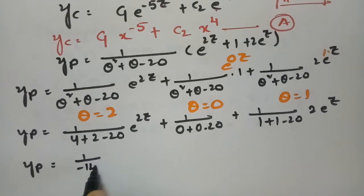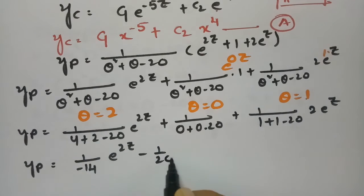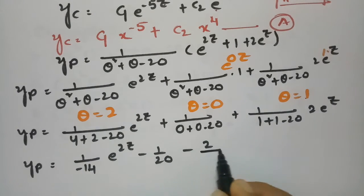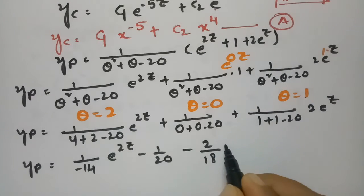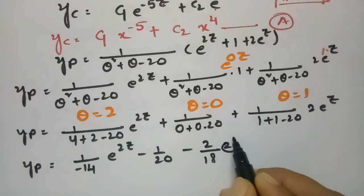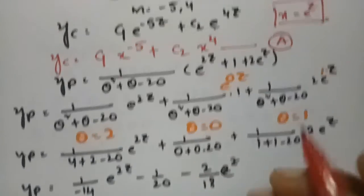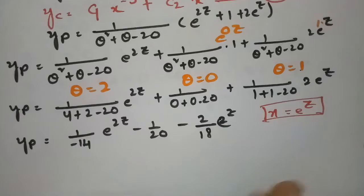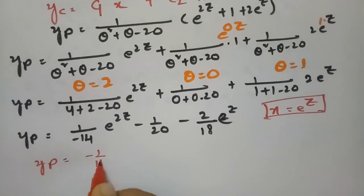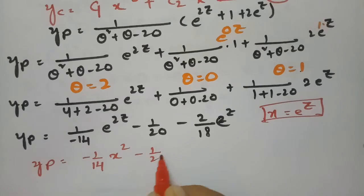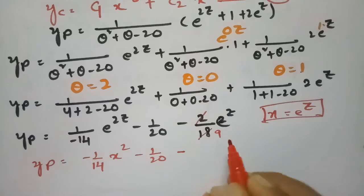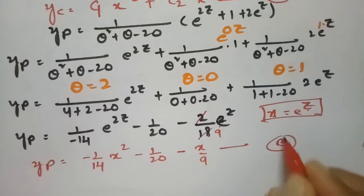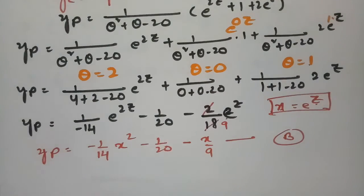So yp = −(1/14)e^(2z) − (1/20) − (2/18)e^z = −(1/14)e^(2z) − (1/20) − (1/9)e^z. Replacing back using e^z = x: yp = −x²/14 − 1/20 − x/9. This is the particular integral.